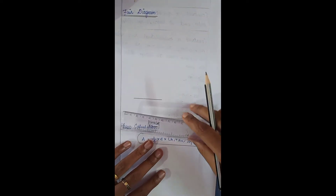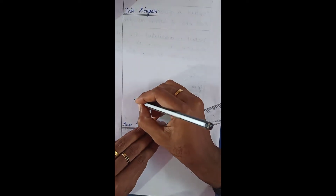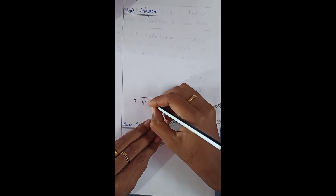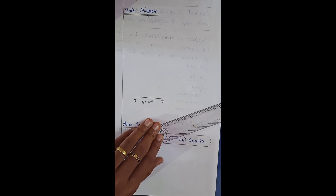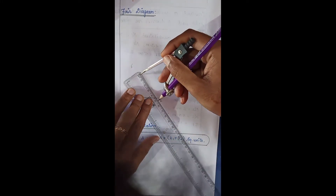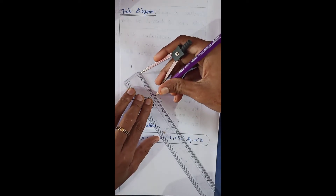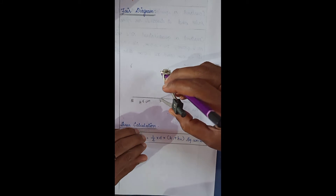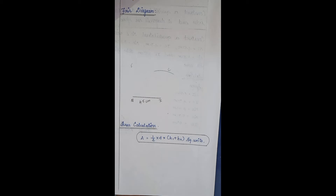We are constructing quadrilateral NICE. First, NI = 4.5 cm, so we draw the line NI as 4.5 cm. Next, IC = 4.3 cm. We should not draw directly — we want to cut the arc. So from I, we measure 4.3 cm and cut the arc to locate point C. The measurement should be correct; measure from zero.